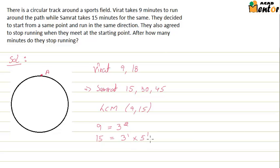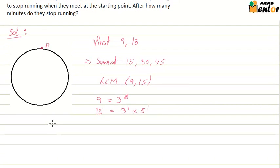So LCM of 9 and 15 would be the highest power of all the factors. The first factor between 9 and 15 is 3, the highest power of 3 is 2. The second factor is 5 and the highest power is 1. So LCM of 9 and 15 comes out to be 45.